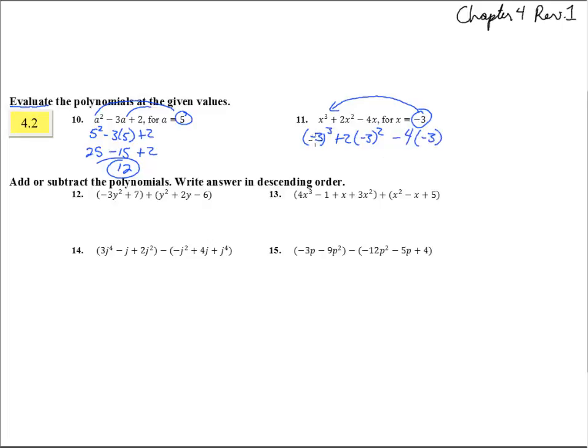So negative 3 cubed is negative 3 times negative 3 times negative 3 gives us negative 27. However, over here, negative 3 squared is a positive 9. That's negative 3 times negative 3 gives you plus 9. So that's 2 times 9, which is 18. We could write down 18 there and then here we could have plus 12. So here we have negative 27 plus 18 plus 12 and that ends up being 3.